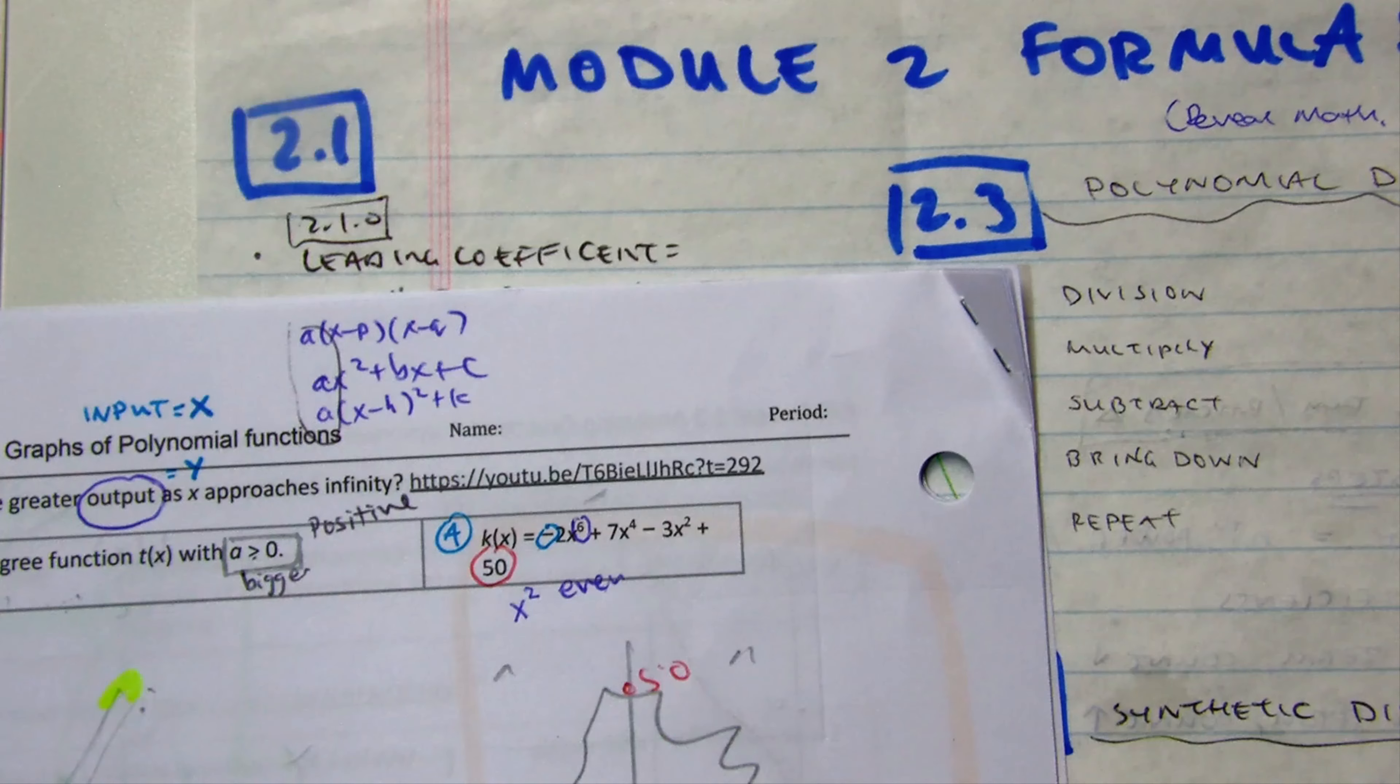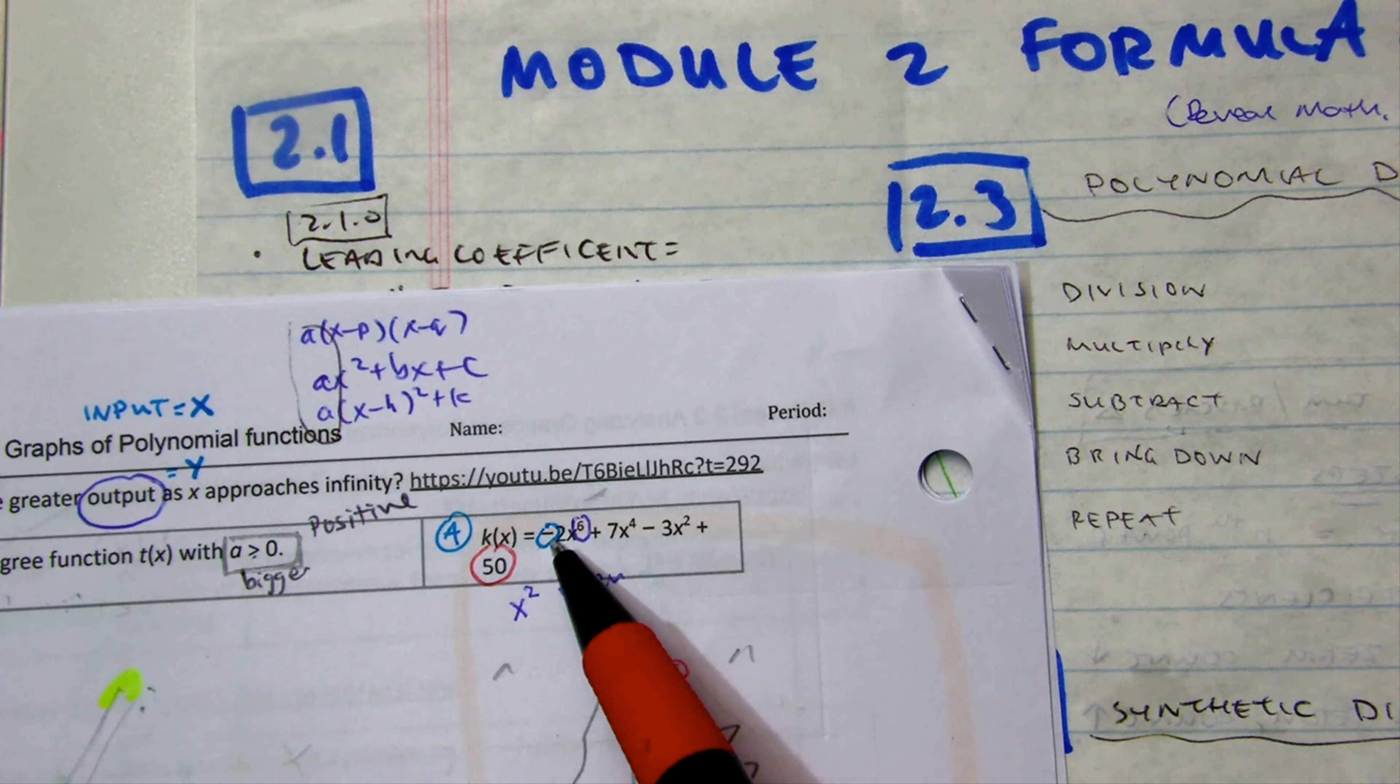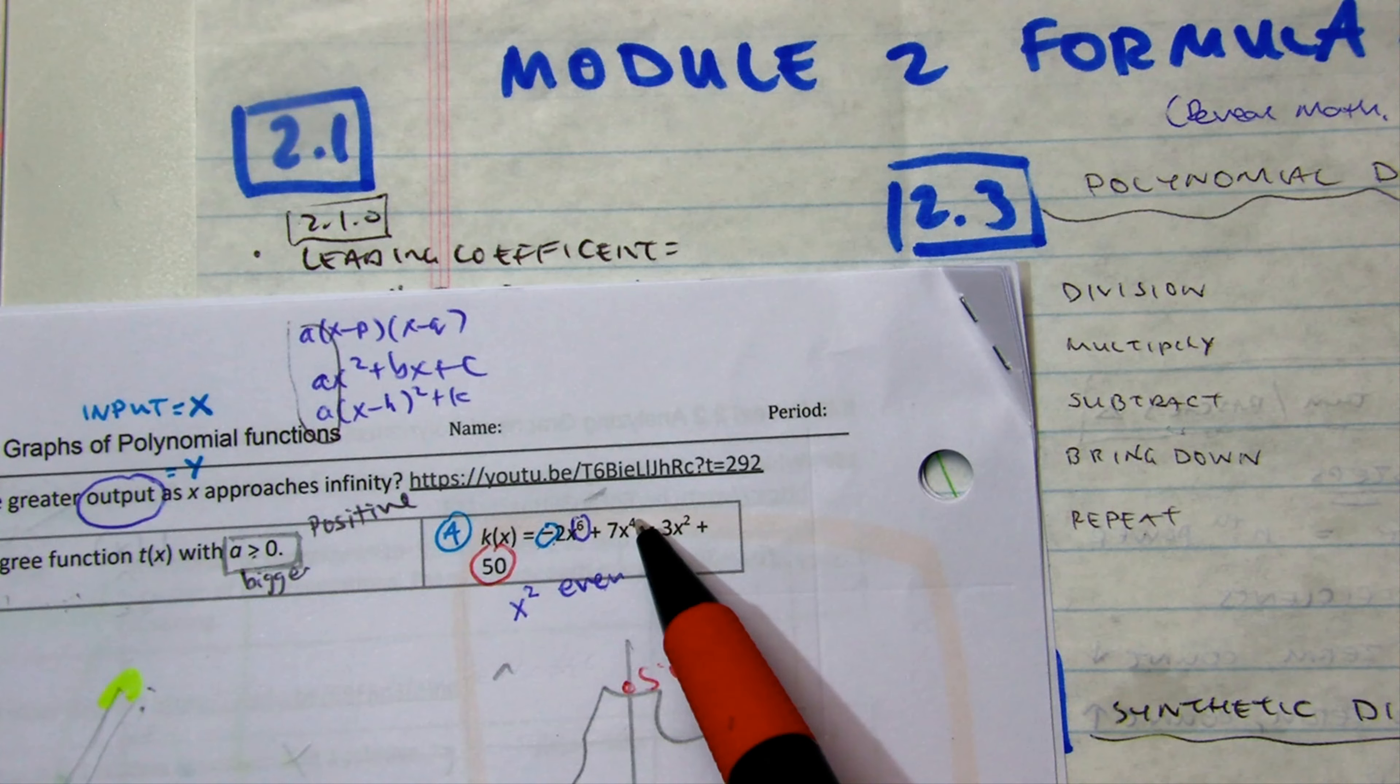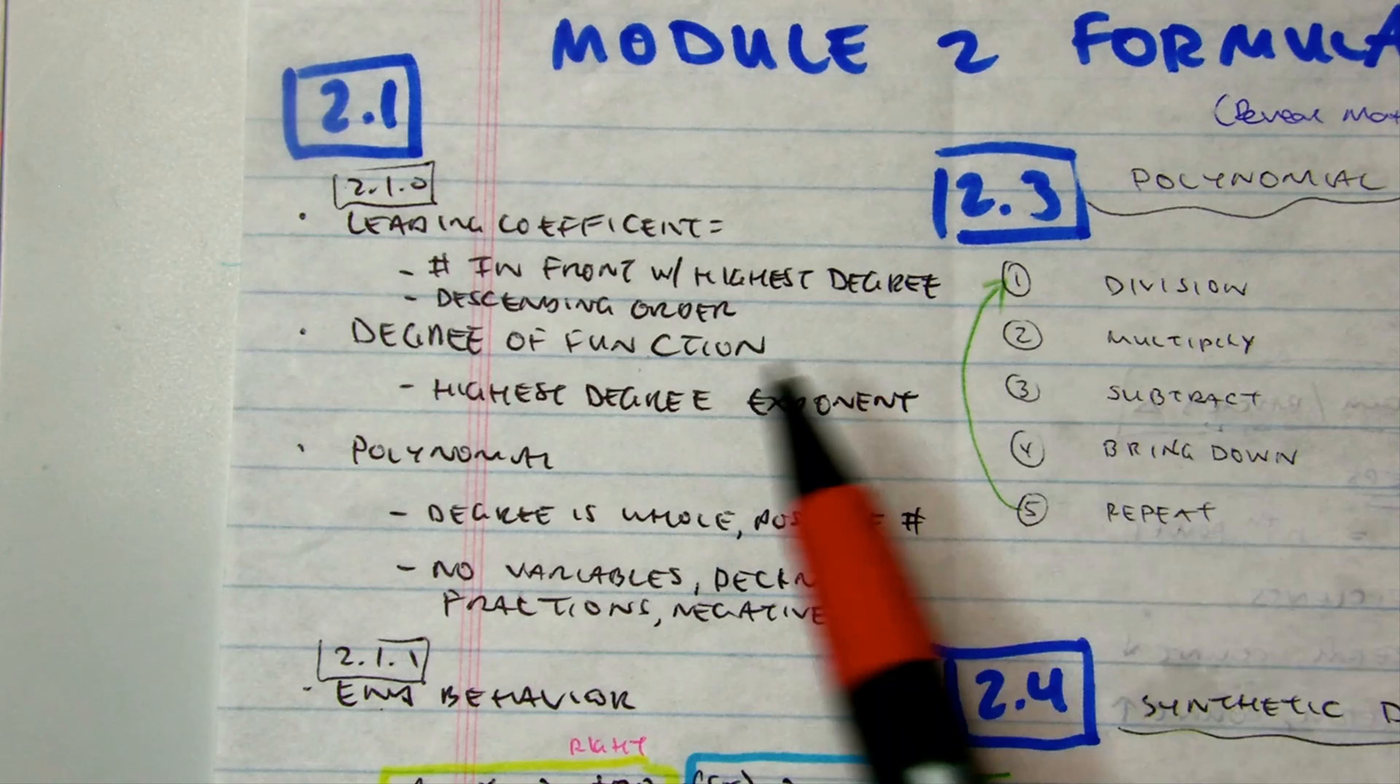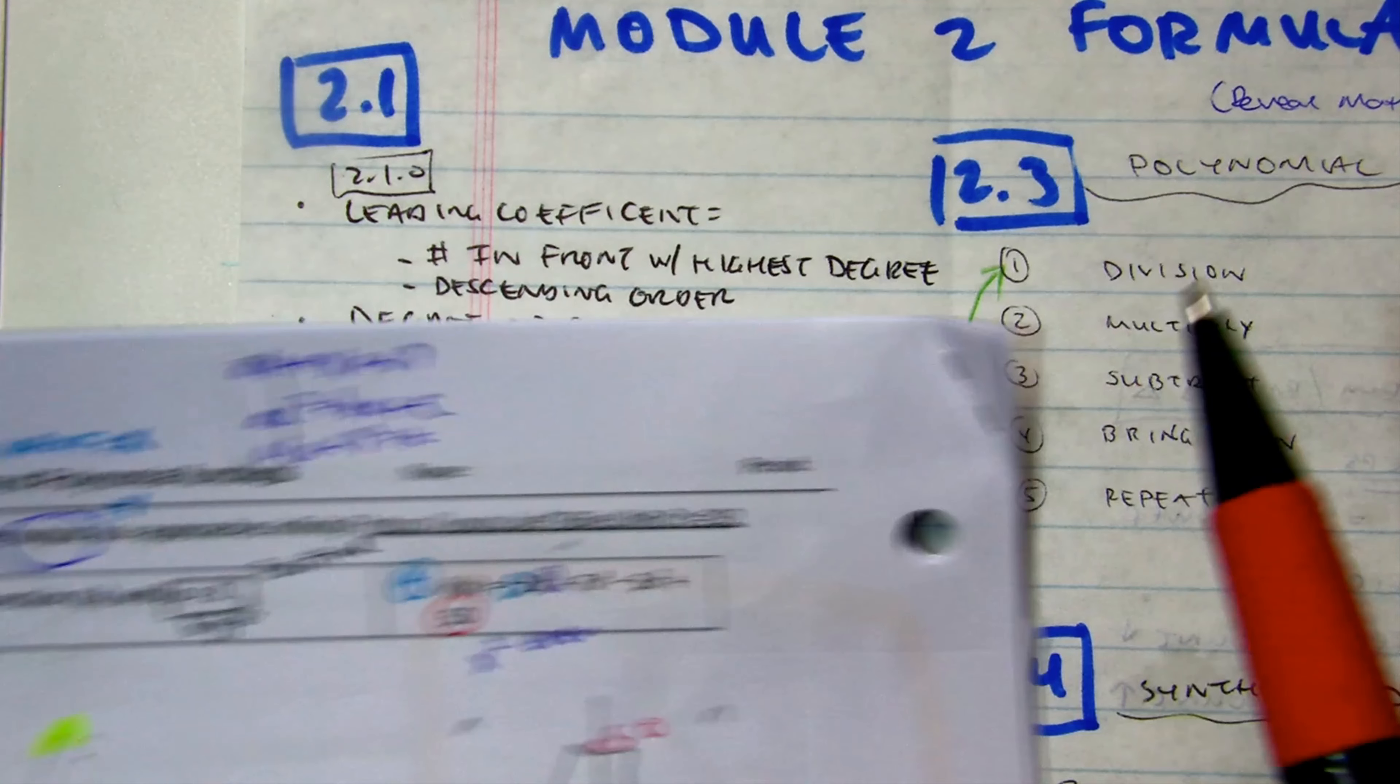Today in class, we just went over this one. The reason why negative 2 is a leading coefficient is because it has the highest degree. If I switch those around, although this might be in the front, it has to go with the highest degree. Negative 2 is a leading coefficient. You have to write them in descending order. That is an example of descending order.